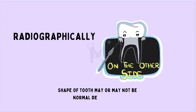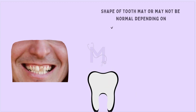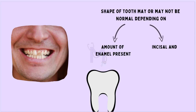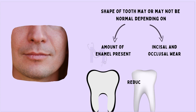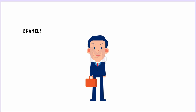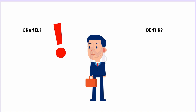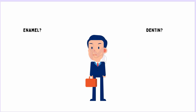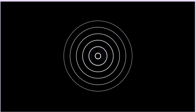Radiographically, the overall shape of the tooth may or may not be normal depending on the amount of enamel present and the incisal and occlusal wear. Enamel appears reduced in bulk, often showing as a thin layer over occlusal and interproximal surfaces. Dentine and pulp chambers appear normal. In certain cases, the calcification of the enamel may be affected such that it may have the same approximate radio density as dentine, making differentiation between the two difficult.